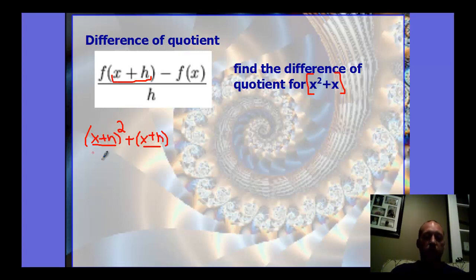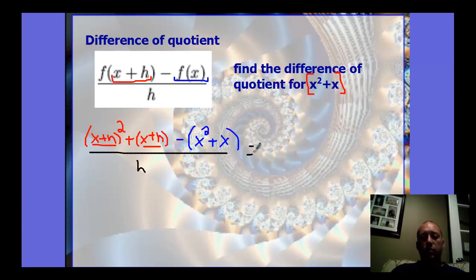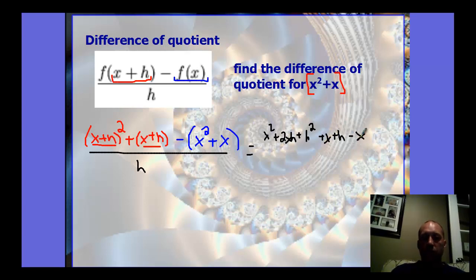So this is like x squared plus x, when x is x plus h. Then we subtract f of x — make sure you show that in parentheses, because you need to subtract the quantity and that negative gets distributed through. Then it's all over h. So x plus h squared expands to x squared plus 2xh plus h squared, plus x plus h.